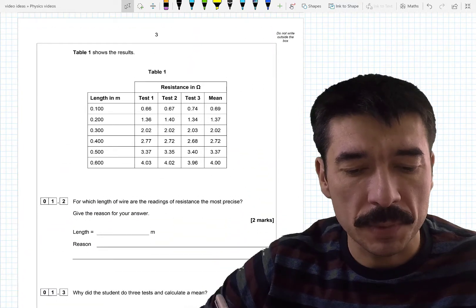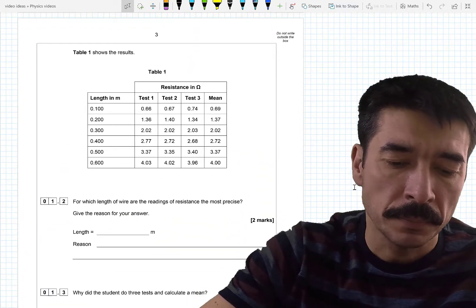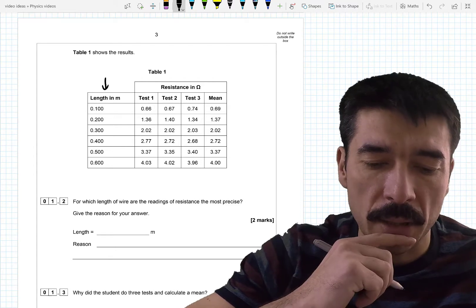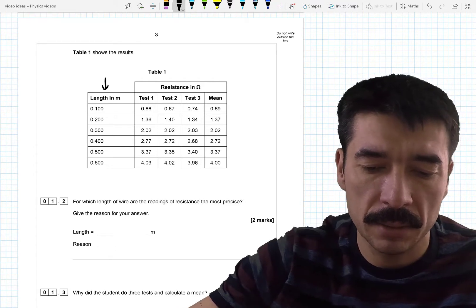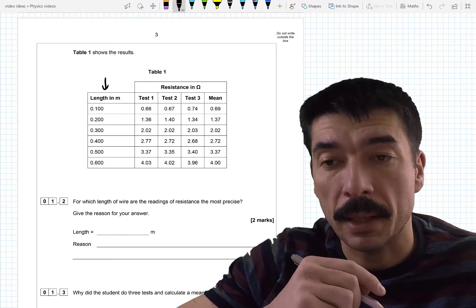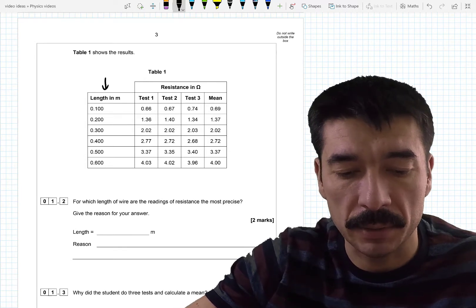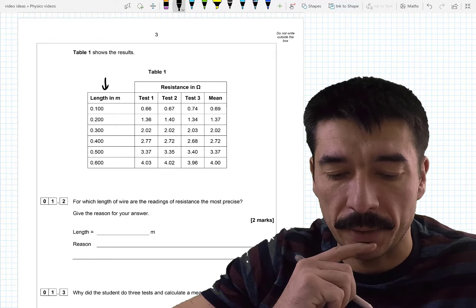Table one shows the results. So we've got various lengths tried out. They measured, well they probably calculated the resistance, but they'll have measured the current and the voltage three separate times and they've taken an average.